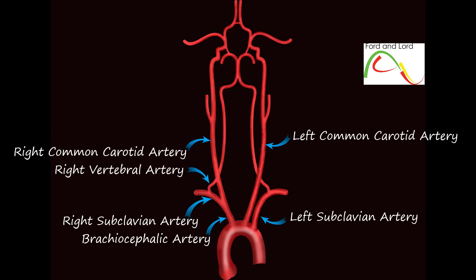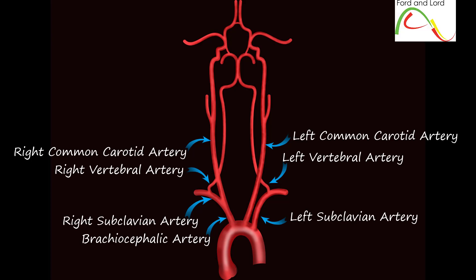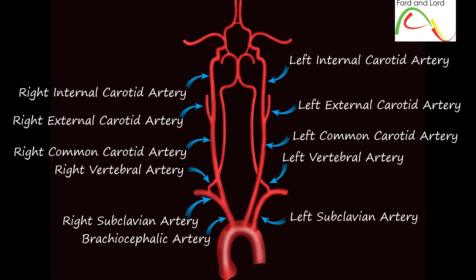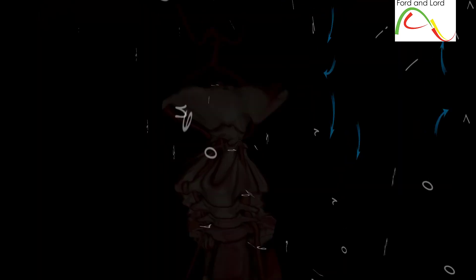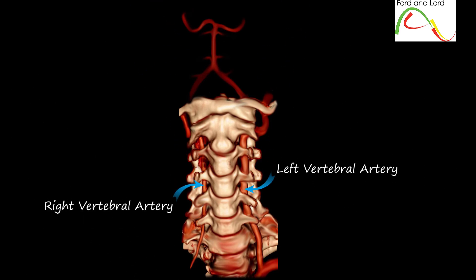The right vertebral artery arises from the right subclavian artery. The left common carotid arises directly from the arch, and then there is the left subclavian artery on the far left of the arch. The left vertebral artery arises from the left subclavian artery. Both common carotid arteries divide further into external and internal carotid arteries at the level of the third cervical vertebra approximately. The external carotid arteries supply blood to the face and neck, while both internal carotid arteries course upward through the neck and enter the skull through the carotid canals on each side. Each vertebral artery courses superiorly as well, entering the transverse foramen of each cervical vertebra, usually with the exception of the 7th cervical vertebra.